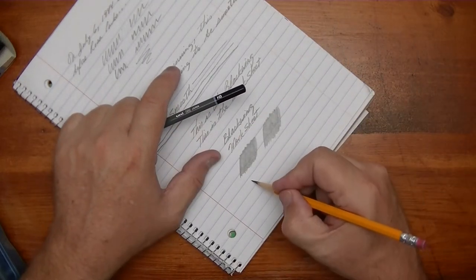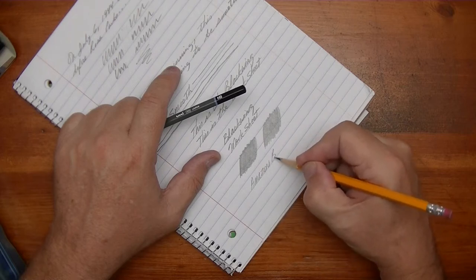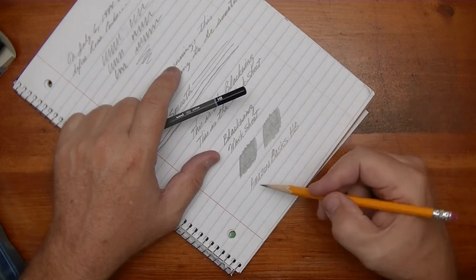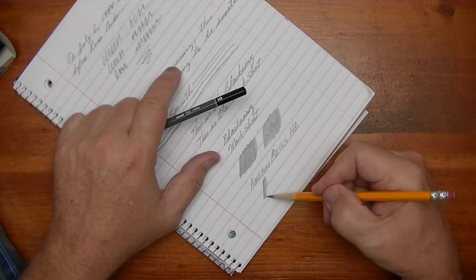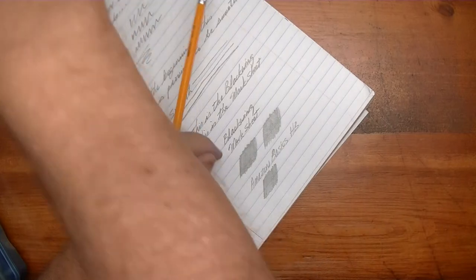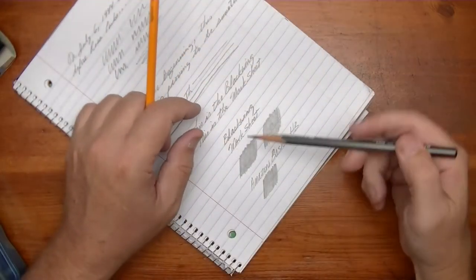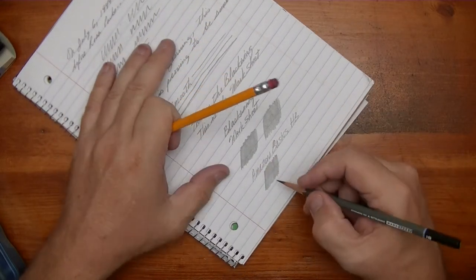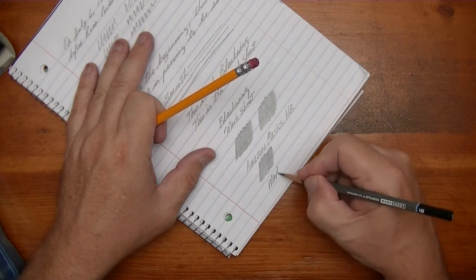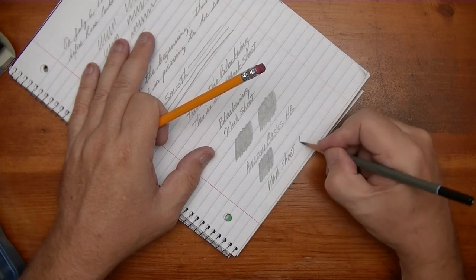Okay. So this is the Amazon Basics HB. Feels pretty standard. Okay, put a point on the Marksheet to be fair. Okay. So then this one here is the, oh, it is smoother and darker immediately. The Marksheet HB. And then I'll put it right here next to it.